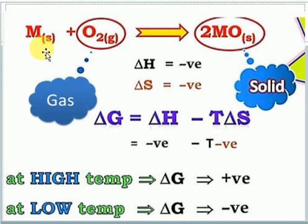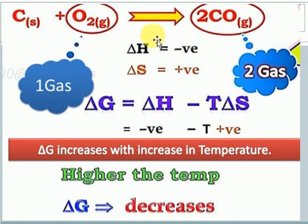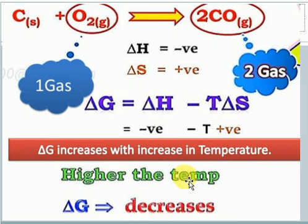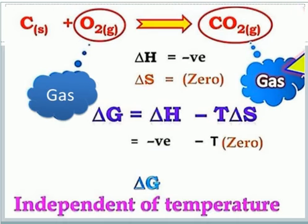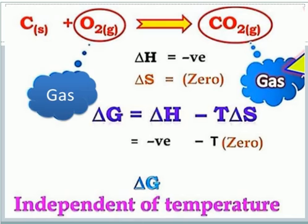When a metal reacts with oxygen to form a metal oxide as a solid, ΔS decreases, meaning the temperature must be low for the reaction to be favorable. When a product is formed as a gas, ΔS is positive and increasing temperature makes the reaction more likely. When the moles of gaseous reactants and products are equal, ΔS ≈ 0 and the reaction does not depend on temperature.